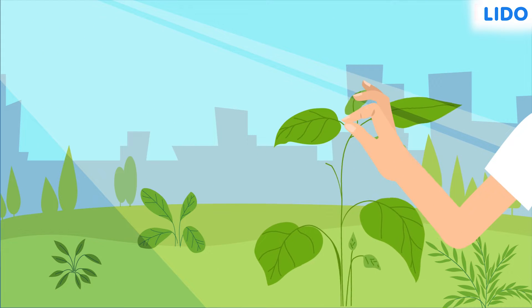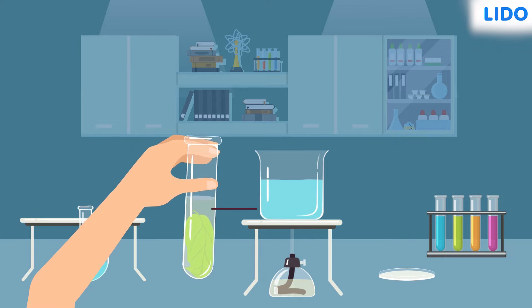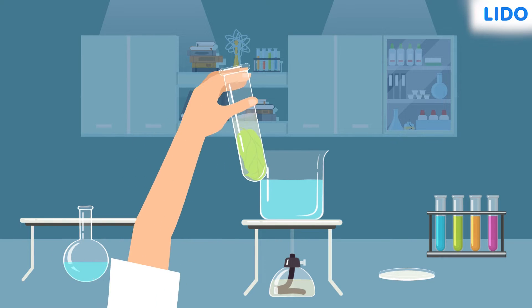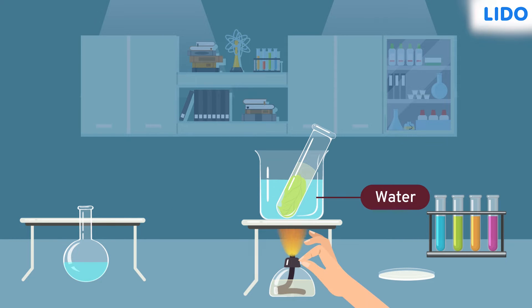For the first experiment, Sapna plucked a green leaf from a plant under the sunlight and put it in a test tube containing alcohol. She placed the test tube in a beaker containing water and turned on the burner.